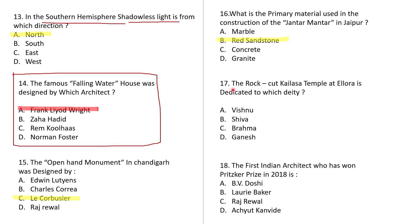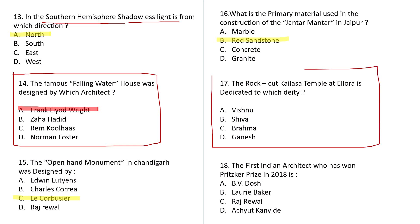Question number 17: The rock-cut Kailasa temple at Ellora is dedicated to which deity? A: Vishnu, B: Shiva, C: Brahma, D: Ganesh. This is a very simple question — try to answer it.